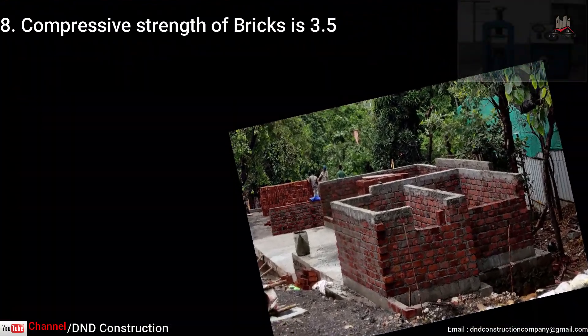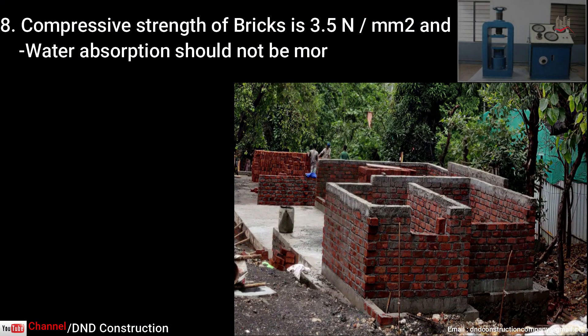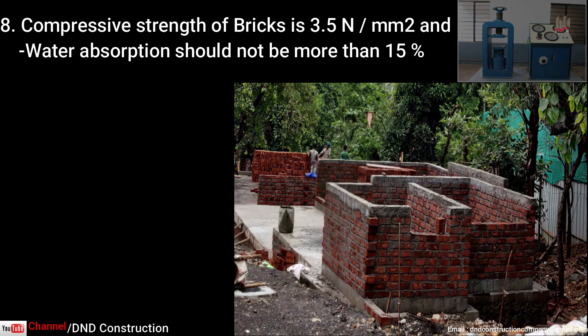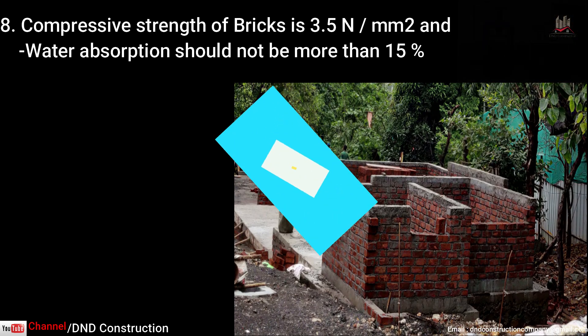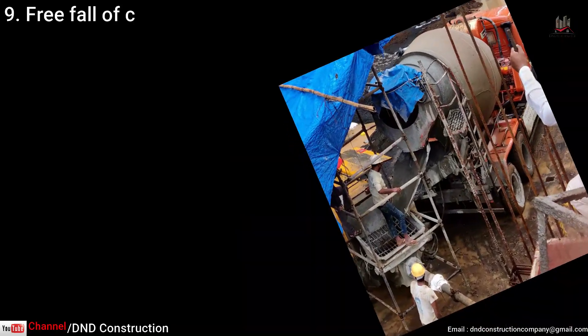Point eight is compressive strength of brick. Compressive strength depends on the type of brick — first class, second class — but generally for standard common bricks used on site it is 3.5 Newton per mm². This is the load-carrying capacity of a brick under compression. Water absorption of brick should not be more than 15% of its dry weight.